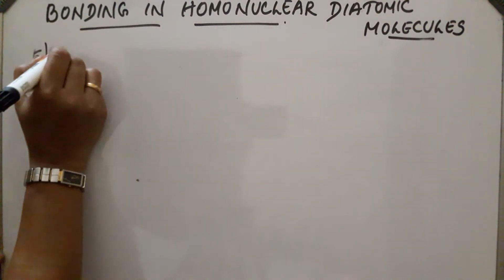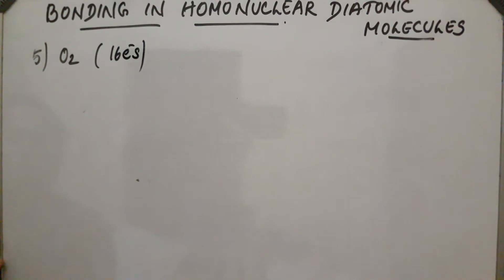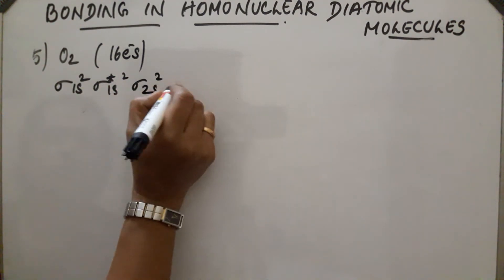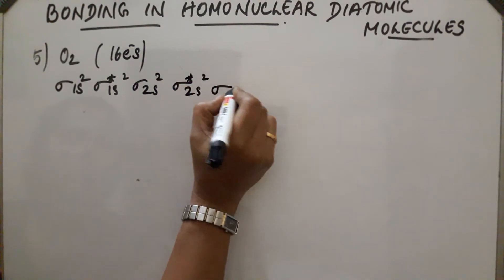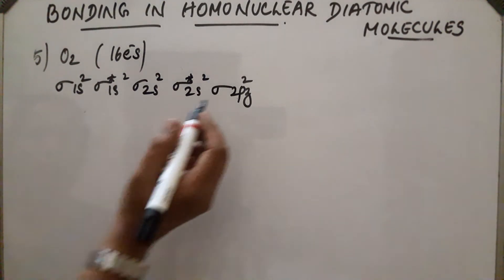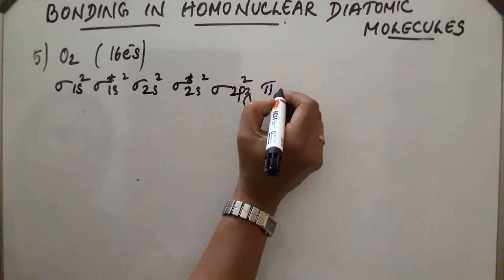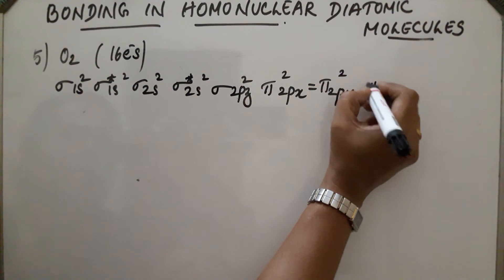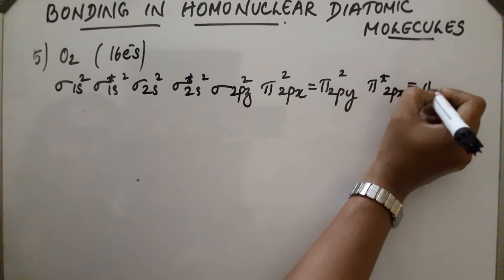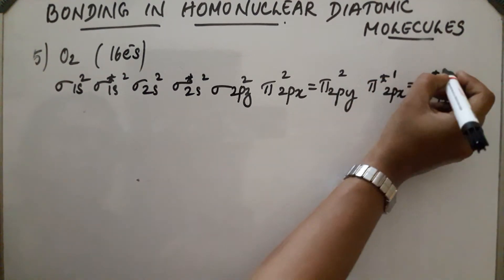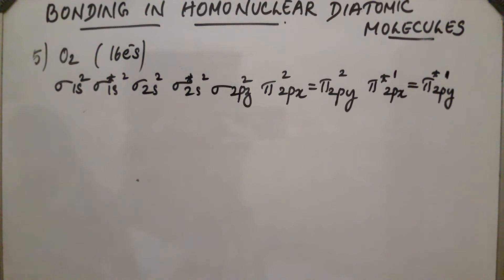The next molecule is O₂, which contains 16 electrons. The configuration is sigma 1s², sigma star 1s², sigma 2s², sigma star 2s², then sigma 2pz. For O₂, F₂, and Ne₂, the energy order has sigma 2pz first, then pi 2px and pi 2py, each with two electrons, followed by pi star 2px and pi star 2py. Filling all 16 electrons gives 2 unpaired electrons in the pi star orbitals. So O₂ is paramagnetic.